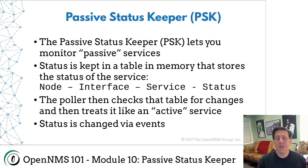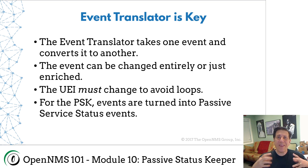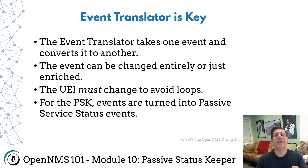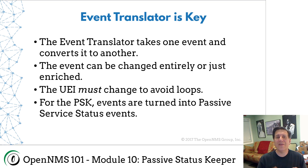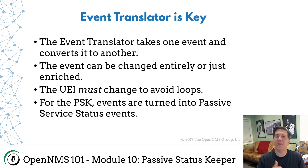Now, how do we change this by events? There's another really cool feature in OpenNMS called the Event Translator. What the Event Translator does is it takes one event and converts it into another event. There are a lot of uses for this, and some of this is event enrichment. We have a number of customers who will add their own database tables to the OpenNMS database — they might have data about which customers are affected by a particular service running on a node.